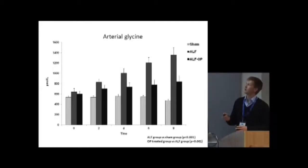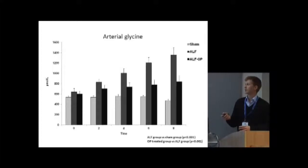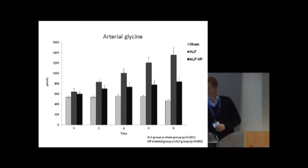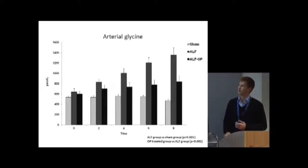This graph shows arterial glycine levels from time 0 to time 8 in the sham group, acute liver failure placebo group, and acute liver failure OP group. We could not find any significant changes over eight hours in the sham group. However, in the acute liver failure group, we found a significant increase in arterial glycine levels. This was significantly attenuated in the OP-treated animals. We also found a positive correlation between arterial glycine levels and arterial ammonia levels in this model.